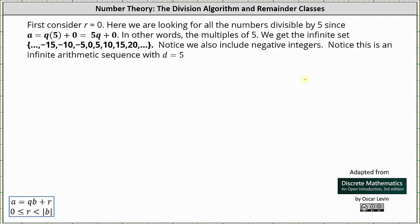Let's first consider r equals zero. Here we are looking for all numbers divisible by five — the set of integers a where a equals q times five plus zero, or simply a equals five q, where q is any integer. In other words, the multiples of five. We get the infinite set: …, −15, −10, −5, 0, 5, 10, 15, 20, … This is the set of integers where dividing by five gives a remainder of zero. Notice this is an infinite arithmetic sequence with a common difference of five, which will be the case for each remainder class.